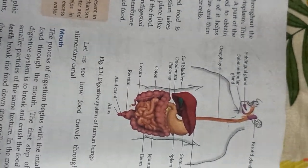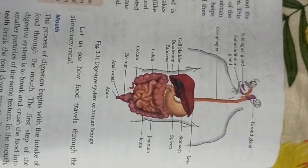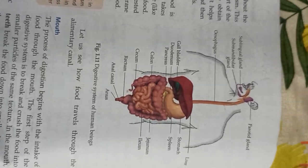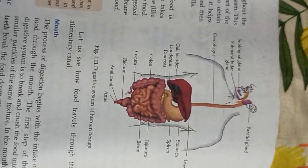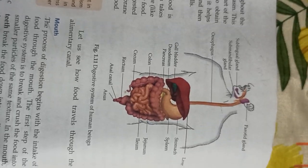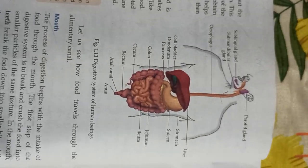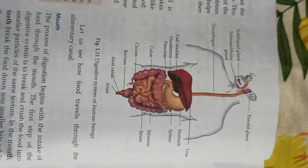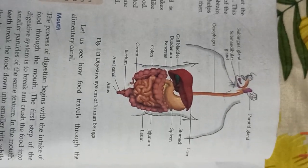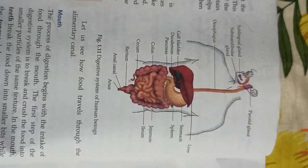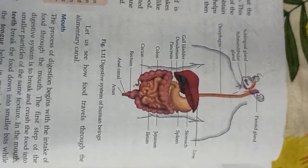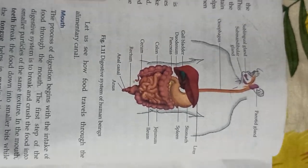The food moves towards the large intestine. In the large intestine, only water and some minerals are absorbed, and the waste material is removed from our body through the anus. I hope you understand this digestive system. If you have any doubts, please ask me. Thank you.